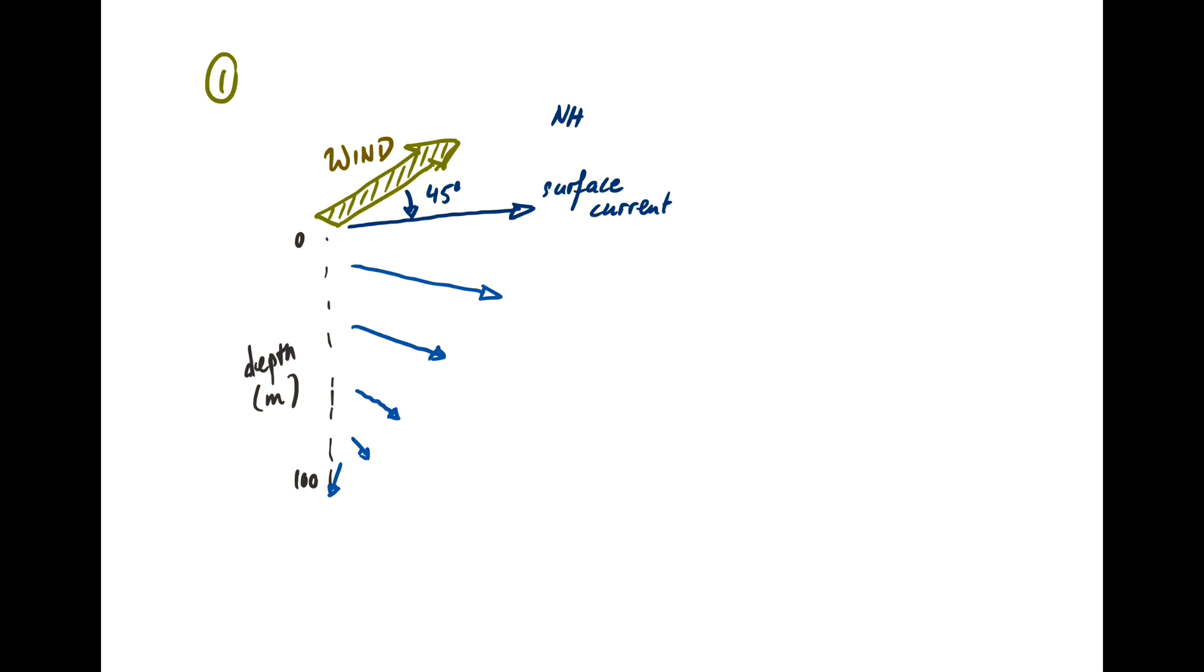So if I project this downward onto a horizontal plane, let's say down here, you get this spiral, and this is called the Ekman spiral.